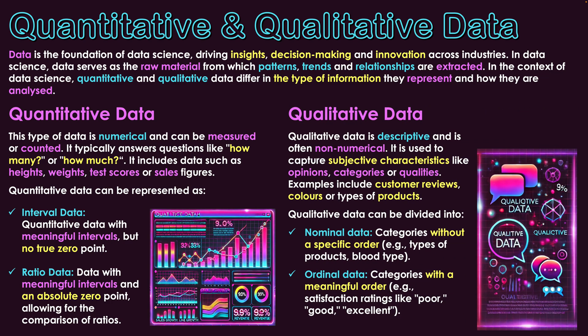We now jump over to qualitative data, which is data that is descriptive but often non-numerical. It is used to capture subjective characteristics like opinions, categories or qualities. Examples could include customer reviews, colors, or types of products — we're putting classifications on things, and that's how we differentiate between different forms of data. Qualitative data can be divided into two forms: nominal data or ordinal data.